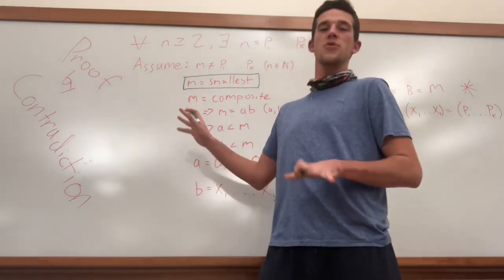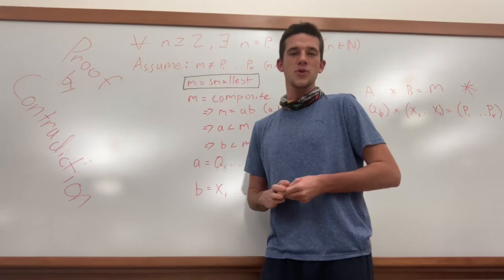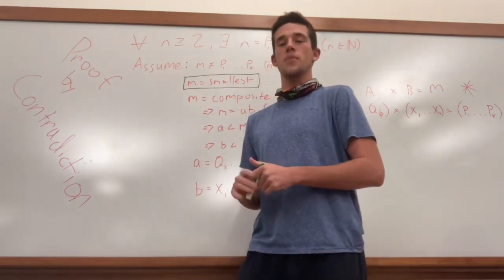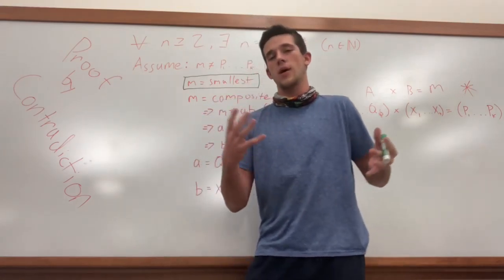This is called the fundamental theorem of arithmetic. And the fundamental theorem of arithmetic states that for every number that is a natural number, it can be represented as a product of prime numbers.